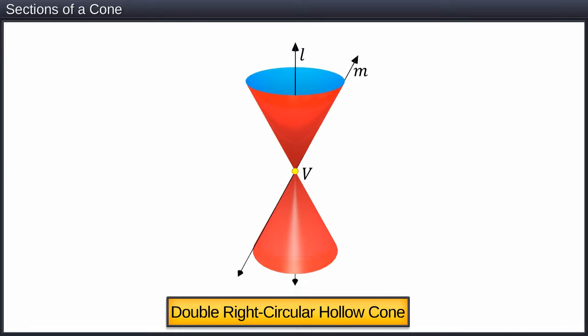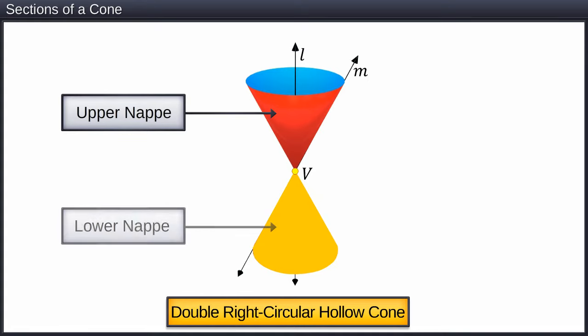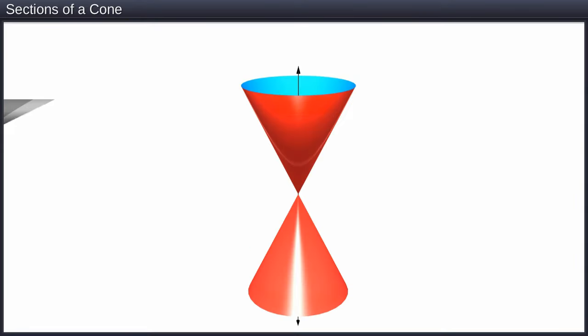The cone is divided into two parts by the vertex. The upper part is called the upper nappe and the lower one is called the lower nappe.